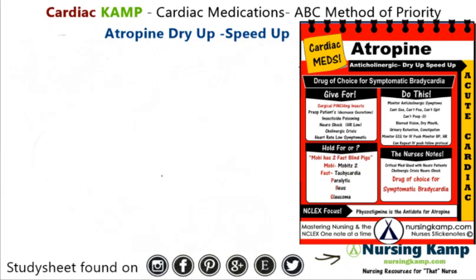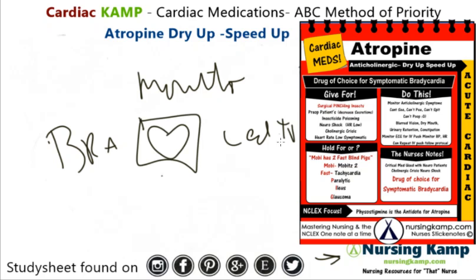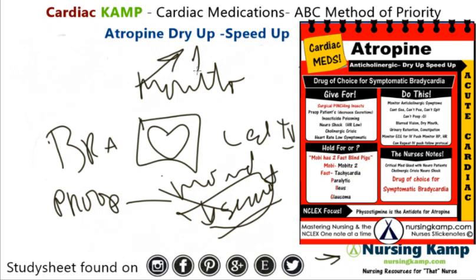In terms of monitoring, if atropine is given for bradycardia, the patient will be on a heart monitor — we monitor them in lead II. If it's given for a pre-op patient, we monitor for decreased secretions, as atropine is given pre-operatively to decrease secretions, particularly for certain surgeries, because of its anticholinergic drying properties.